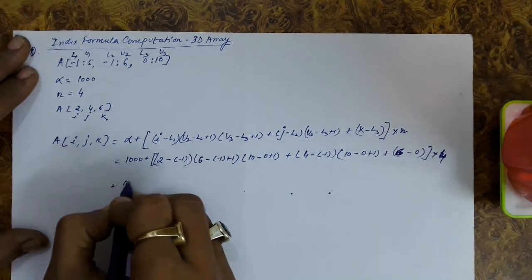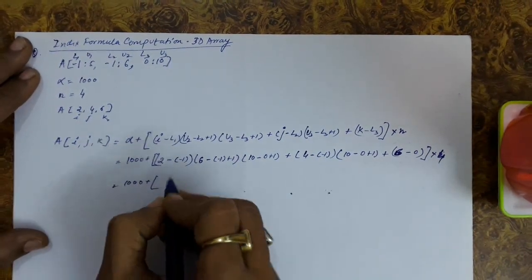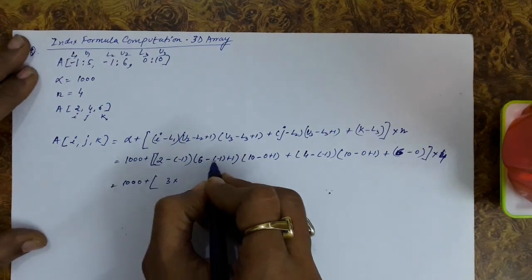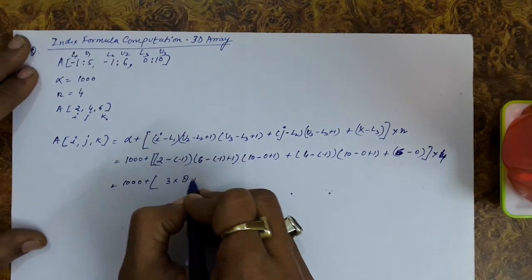So this is equal to 1000 plus 2 minus minus 1 is 3, plus this is 7 plus 8.